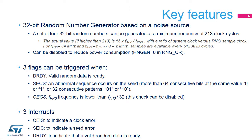The Data Ready flag is set in the status register when a set of new random data is ready and validated. The RNG performs a basic verification of randomness on the provided data. For example, if more than 64 consecutive bits have the same value — 0 or 1 — or there are more than 32 consecutive alternating 0s and 1s, a seed error current status flag is set.